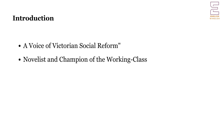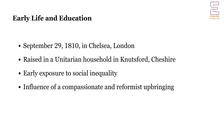Elizabeth Cleghorn Stevenson was born on September 29, 1810, in Chelsea, London. She was raised in a Unitarian household that valued education and social reform. Her mother died when she was just a year old, and she was sent to live with her aunt in Knutsford, Cheshire.